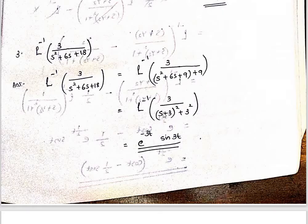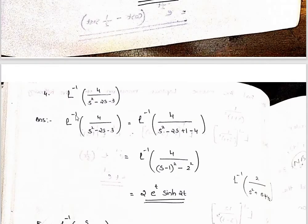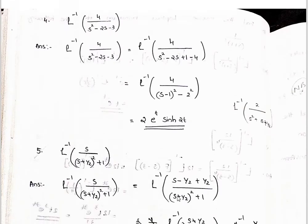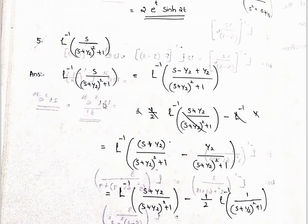Factorize with s plus 3, giving e raised to minus 3t. Then split the numerator: s minus alpha plus alpha. Split as minus half plus half times 2, separating into a cosine term and a sine term.